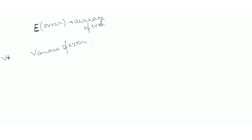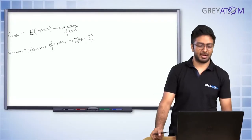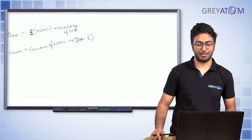Then there's variance, which is the variance of your error. So bias is the average of your error, and variance is the variance of your error. You measure the variance of error as error minus the mean of your error.